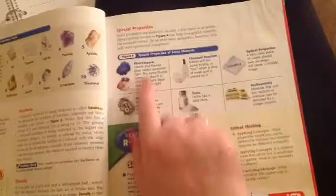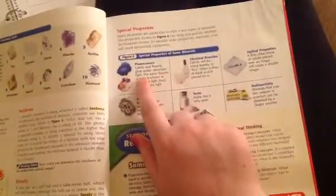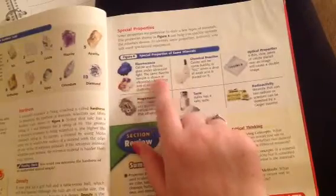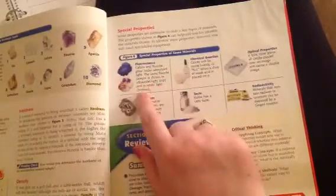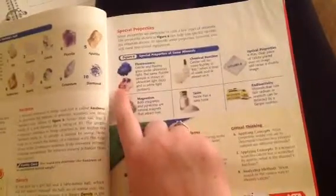So this figure is going to help you with this. Fluorescence: calcite and fluorite glow under ultraviolet light. The same fluorite sample is shown in ultraviolet light on top and in white light on the bottom. So this is what happens when it's under a glow light and white light.